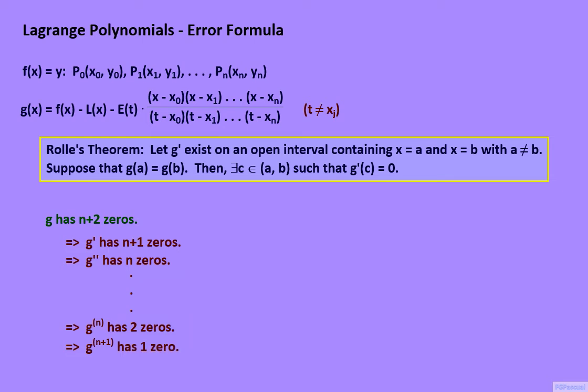Let us give this guaranteed zero for the (n+1)th derivative of g a name. Let us call it c*. So the (n+1)th derivative of g applied to c* is equal to zero. The first term in the (n+1)th derivative of g is the (n+1)th derivative of f. We evaluate this derivative at c*. We take a look at a special case to find the (n+1)th derivative of L.